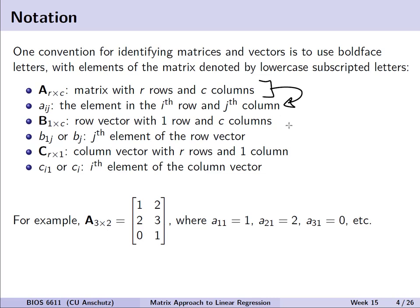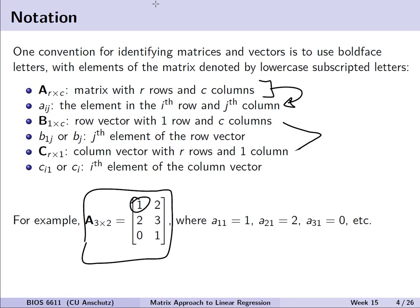We can also specify either column or row vectors, where B is an example of a row vector with one row and C columns, and C is an example of a column vector with a single column but multiple rows. Below we see an example for a 3 by 2 matrix, where lowercase A sub 1,1 is the first element, and A sub 2,1 represents the second element.